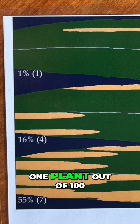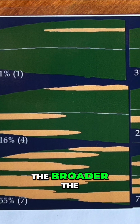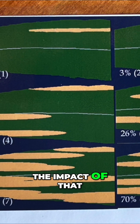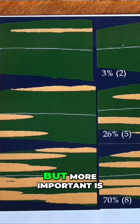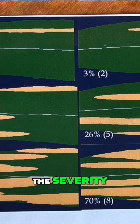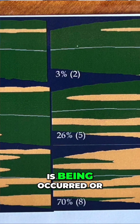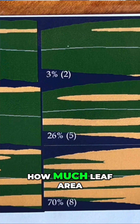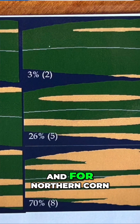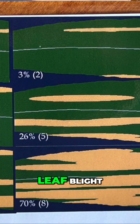It's really important with all these diseases to determine their incidence and severity. Incidence basically means how much is in there — one plant out of a hundred is one percent. The more incidence, the broader the impact of that disease across the field. But more important is the severity: how much damage is occurring or how much leaf area is being impacted.